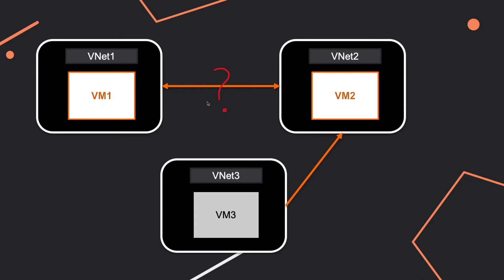Can virtual machine 1 connect to virtual machine 2? The answer is yes, because of that bi-directional relation. Can VM3 connect to VM2? The answer is no. Even if there is a peering connection between vnet 3 and vnet 2, it has to be bi-directional - and this is the tricky part you have to keep in mind.